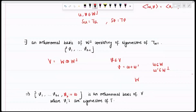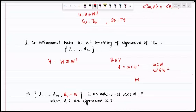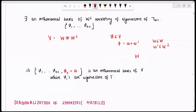This is now an orthonormal basis of V where all basis vectors are eigenvectors of T. I have proved that if I have a finite dimensional real inner product space and a symmetric linear map acting on it, then there exists an orthonormal basis consisting of eigenvectors of that map. This theorem acts as a backbone to an important operation on matrices: diagonalization of symmetric matrices.